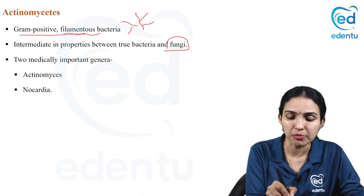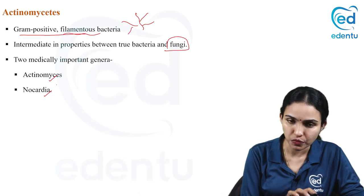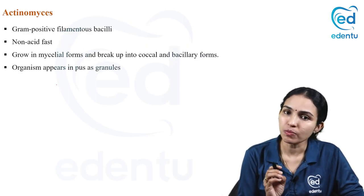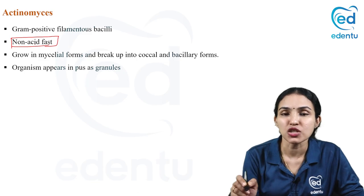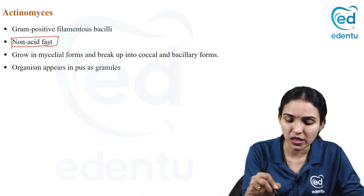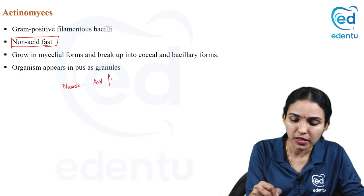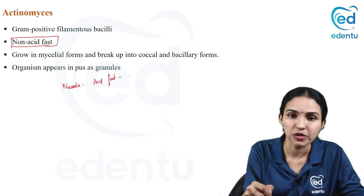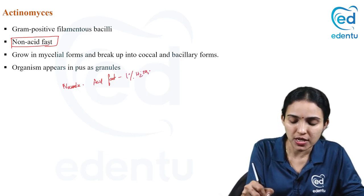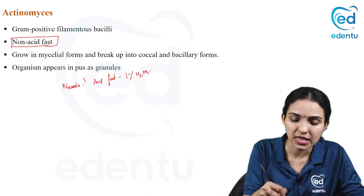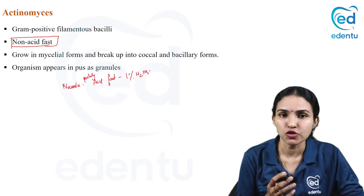The two medically important genera are actinomyces and nocardia — both are gram-positive filamentous bacilli. The key difference is that actinomyces is non-acid-fast, while nocardia is acid-fast. For mycobacterium TB we use 25% sulfuric acid for decolorization, but for nocardia you need only 1% sulfuric acid, so it is called weakly acid-fast or partially acid-fast.